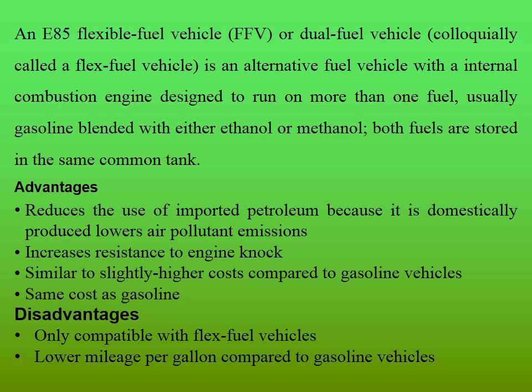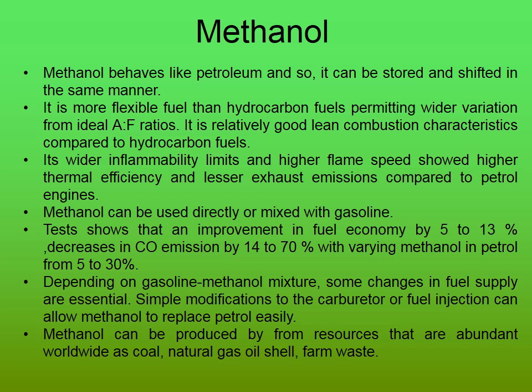E85 means 85% ethanol and 15% gasoline. A flexible fuel vehicle or dual fuel vehicle is an alternative fuel vehicle with an internal combustion engine designed to run on more than one fuel, usually gasoline blended with either ethanol or methanol. Advantages: reduces use of imported petroleum as it is domestically produced; lower air pollution emissions; increased resistance to engine knock; similar to slightly higher cost compared to gasoline vehicles. Disadvantages: only compatible with flex fuel vehicles; lower mileage per gallon compared to gasoline vehicles.